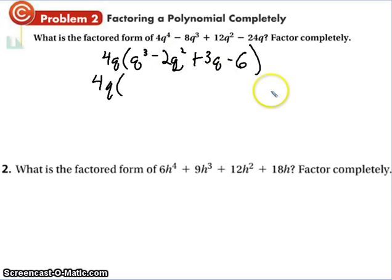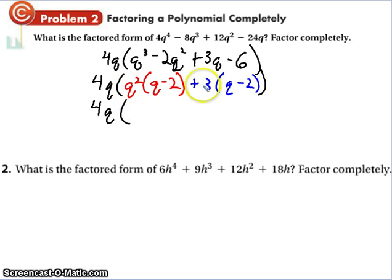I'm going to group these two together. Pull out a like term. So I can pull out a q squared leaving us with q minus 2. I'm going to pull out a 3 leaving us with a q minus 2. So I've got the colored portions. Now I'm going to leave 4q. This time I'm going to put these two together: q squared plus 3. And I'm going to bring these parts together and get q minus 2. So the final answer is 4q times q squared plus 3, because that can't be factored any further, times q minus 2.